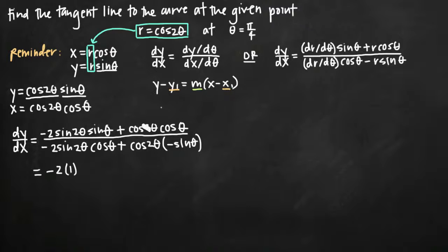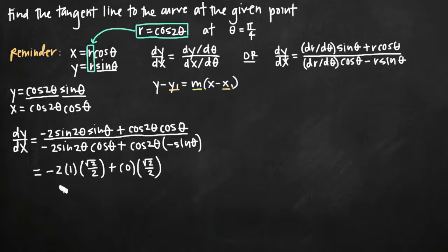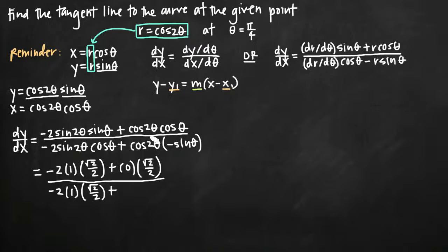We then add cosine of 2 theta — plugging in pi over 4 gives cosine of pi over 2, which is 0 — times cosine of theta, which is square root of 2 over 2. In the denominator we get the same substitutions: negative 2 times sine of pi over 2 equals 1, times cosine of pi over 4 equals root 2 over 2, minus cosine of pi over 2 which is 0, times sine of theta which is root 2 over 2.